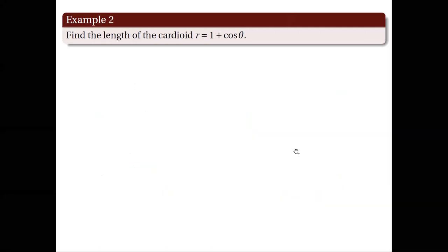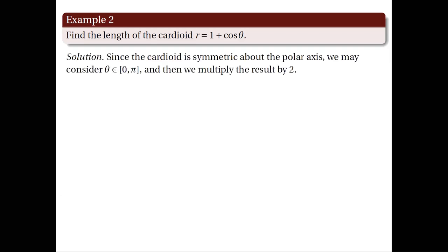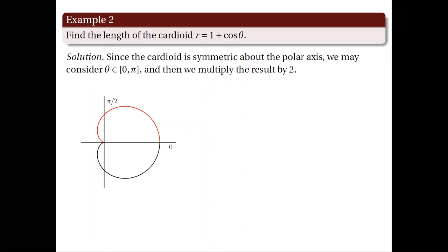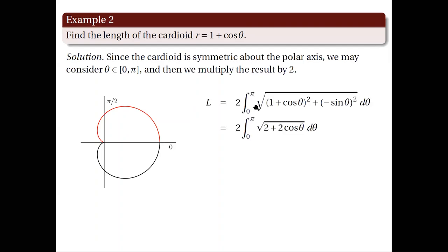Now let's proceed to the next example where we want to find the length of the cardioid r equals 1 plus cosine theta. This polar curve is a cardioid oriented to the right and symmetric about the polar axis, as we can see in the following illustration. Since this cardioid is symmetric about the polar axis, we can take advantage of its symmetry and consider theta from 0 to π only. The arc length is given by the integral from 0 to π of the square root of (1 + cosθ)² plus (−sinθ)², and then we multiply the result by 2 to get the length of the whole cardioid.